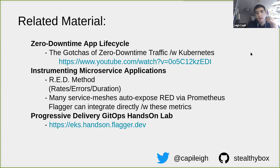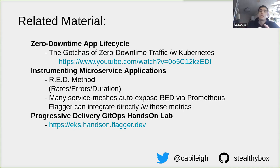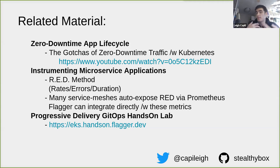As a prereq, there's related material to look at. First is zero downtime app lifecycle — on Kubernetes this is very different from progressive delivery, but I'd consider it a prerequisite to having mature app lifecycle in production. If you haven't thought about keeping your app serving traffic with no downtime as you continuously deploy, you'll want to watch a talk or read blog posts covering that topic.